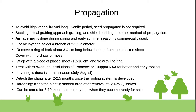Air layering during spring and early summer season is commercially used. For air layering, select a branch of 2 to 3.5 cm diameter. Remove a 3 to 4 cm long girdle of bark and cover the selected spot with moist soil or moss. Wrap with a piece of plastic sheet 15 to 10 cm and tie with a jute ring. The wrap may be treated with 50% aqueous solution of root tone or 100 ppm of NAA to improve rooting. Layering is done in the humid season.